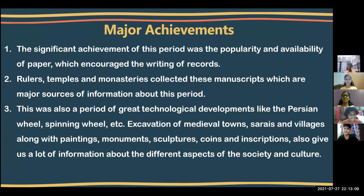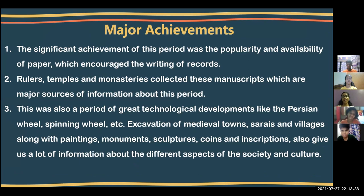Major Achievements: The significant achievement of this period was the popularity and availability of paper, which encouraged the writing of records. Rulers, temples and monasteries collected manuscripts, which are major sources of information. This was also a period of great technological development, including the Persian wheel and spinning wheel. The exhibition of medieval towns, serais and villages, along with paintings, monuments, sculptures, coins and inscriptions, gave us a lot of information about the society and culture.